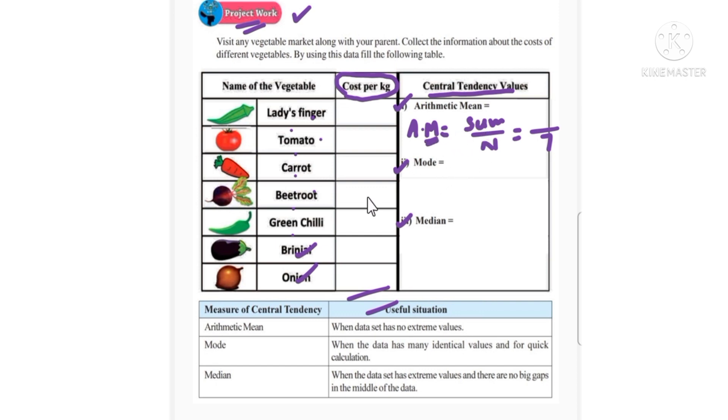Arithmetic mean is done. After that, mode. Mode is also calculated. That means, if we have any of the repeated values - if repeated value is there, then we have mode.